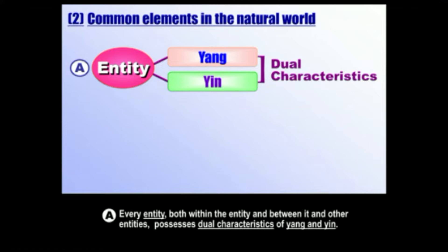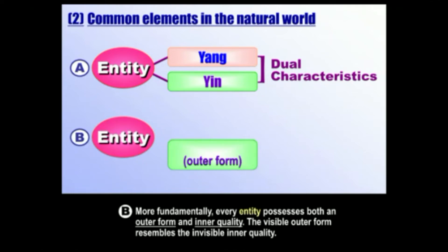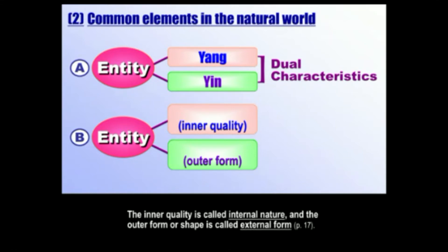We see everything in creation comes in two kinds: positive and negative, male and female. There is a second set of dual characteristics, even more fundamental. Every entity possesses both an outer form, which we can see, and an inner quality. The visible outer form reflects that invisible inner quality. The inner quality we call the internal nature, and the outer form or shape that we can visibly see we call the external form.